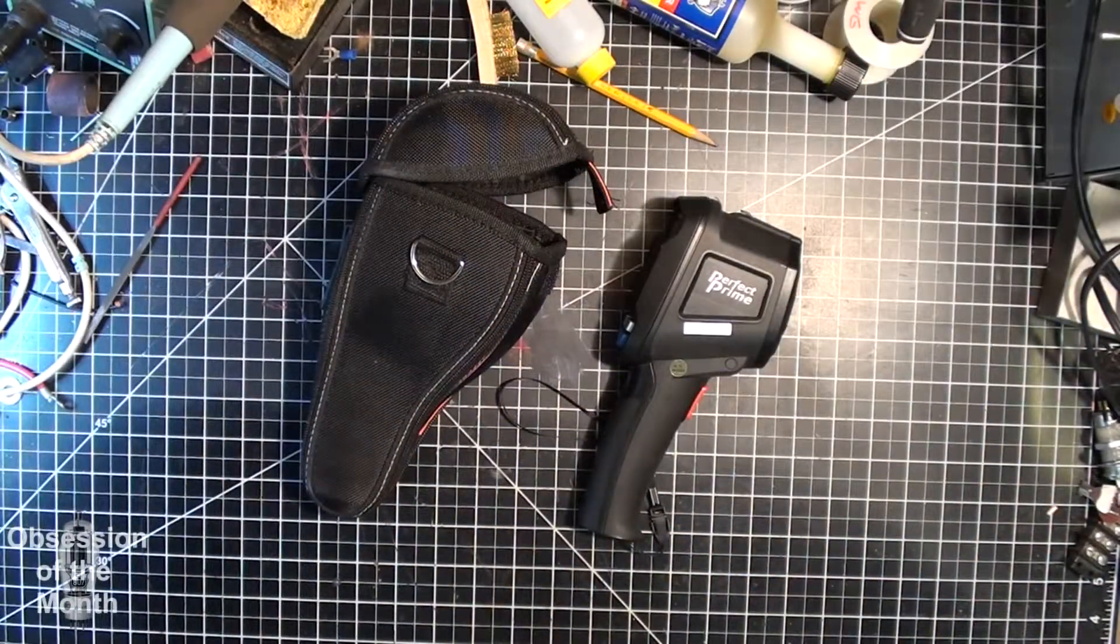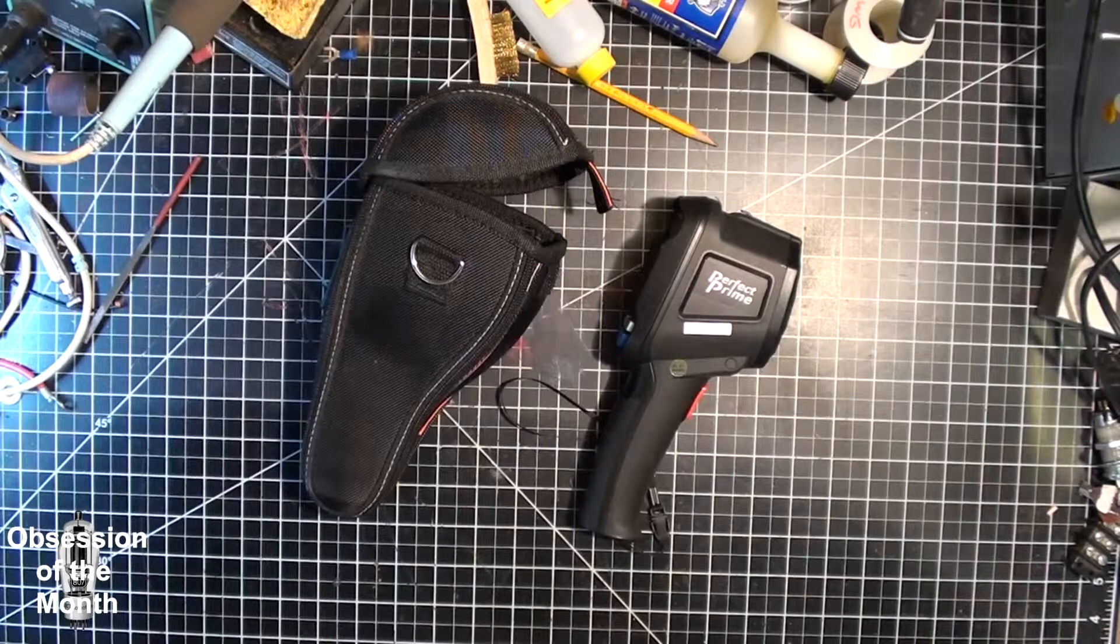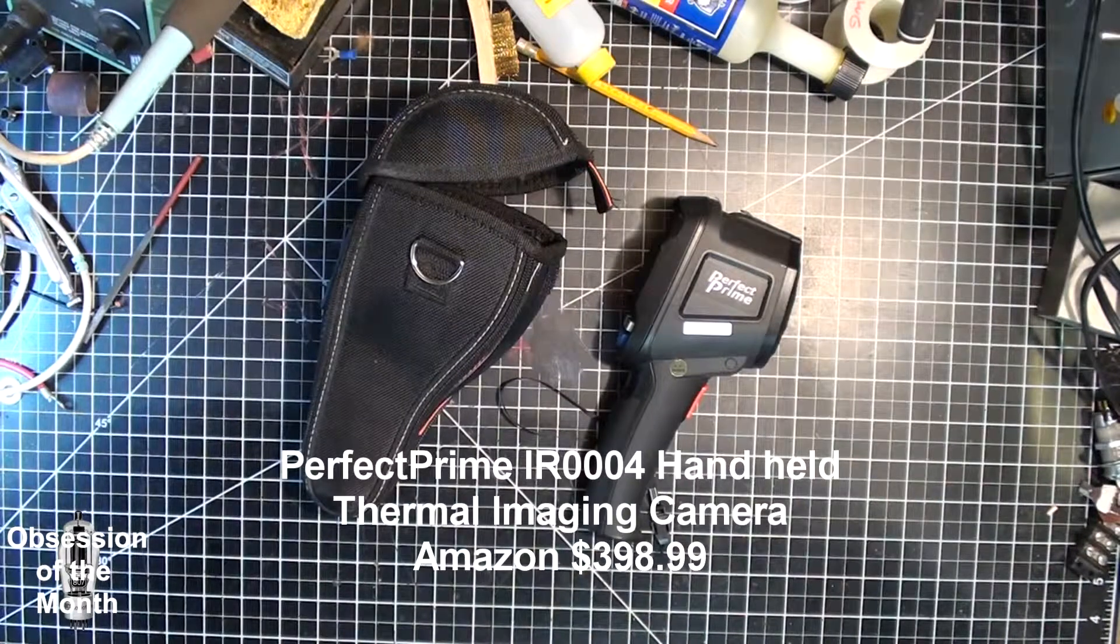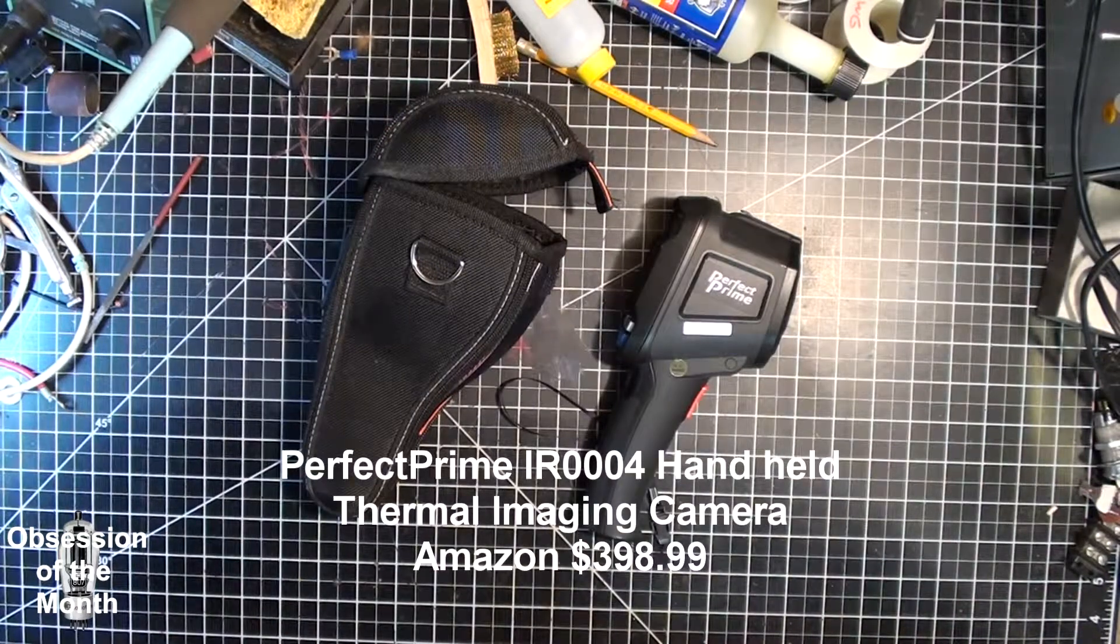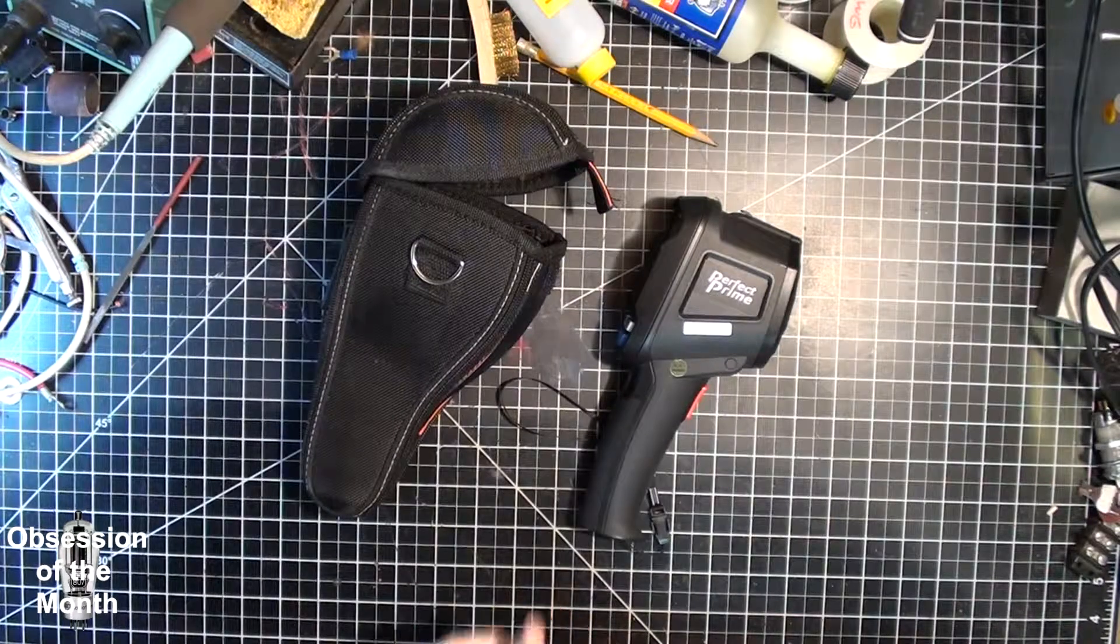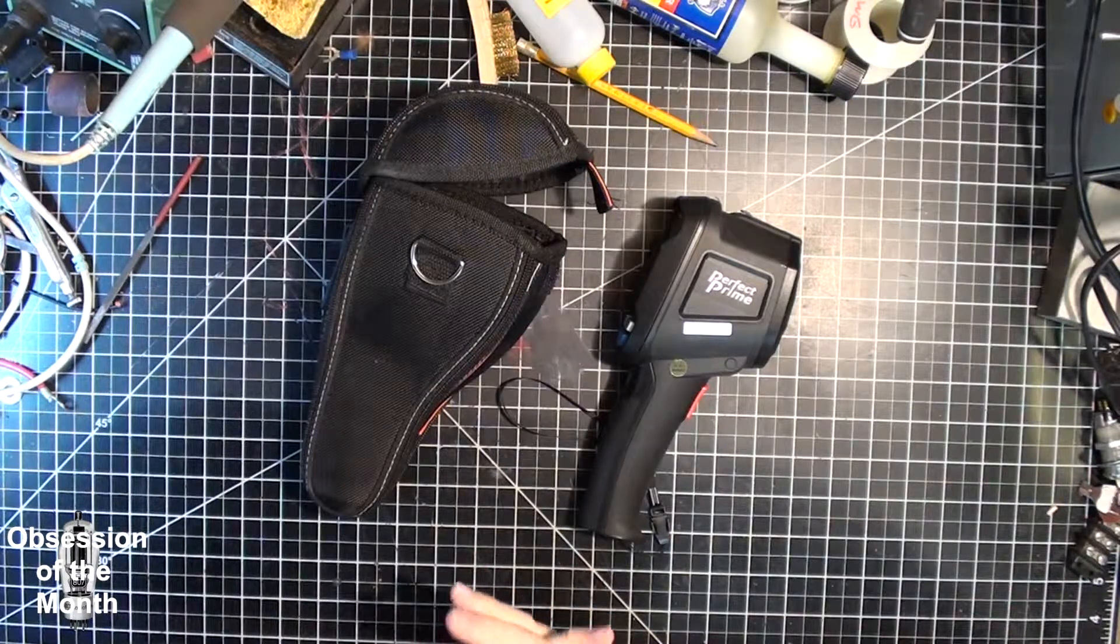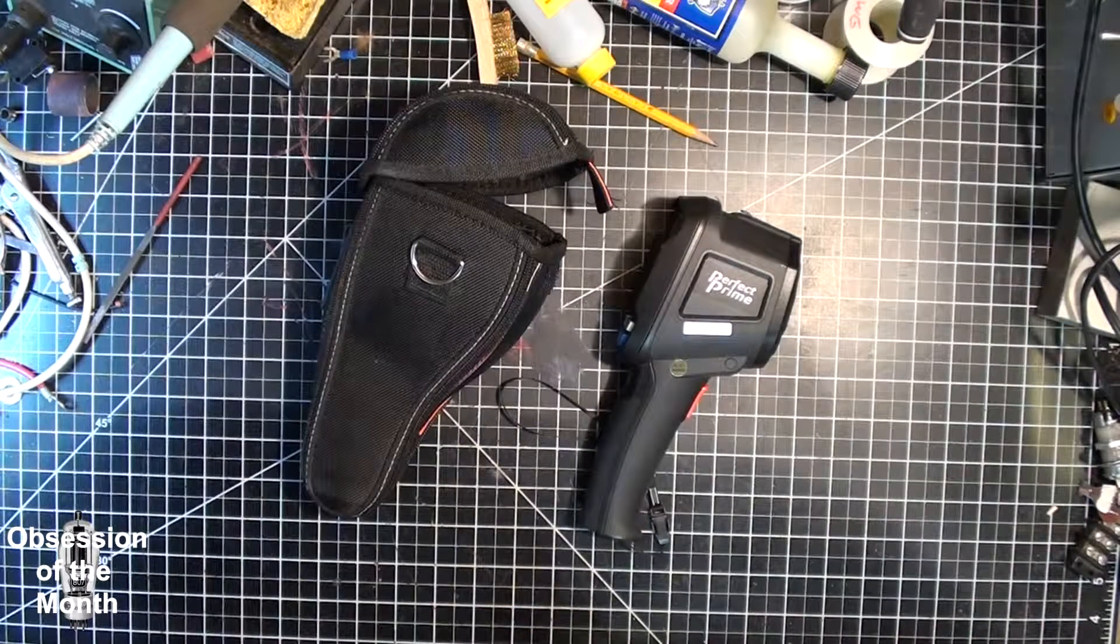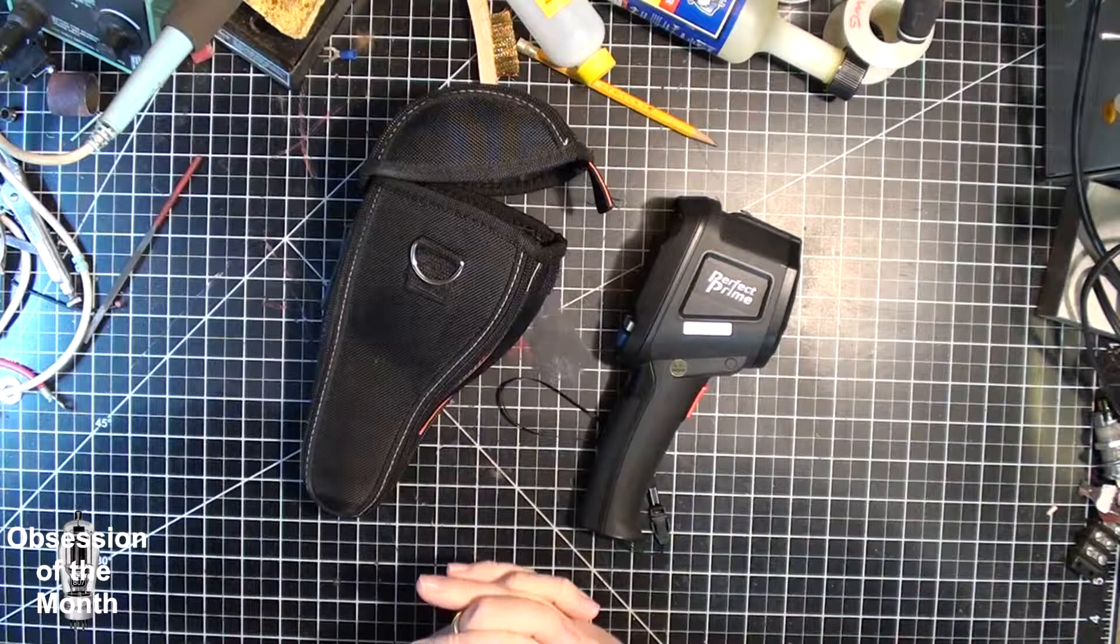All righty then, this morning this video is about the Perfect Prime IR-004 thermal imaging camera. This is kind of a clone of the FLIR thermal imaging cameras. This one's a slightly better quality than some of the other cheap chinesium knockoffs. I'm just going to do a quick rundown on its features.